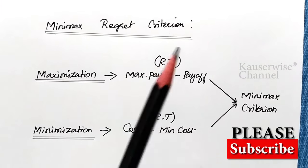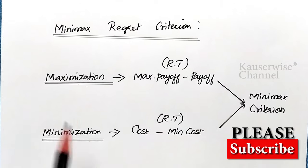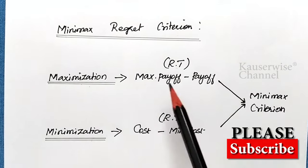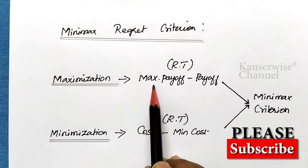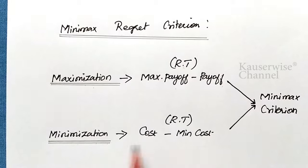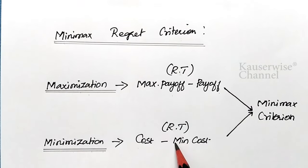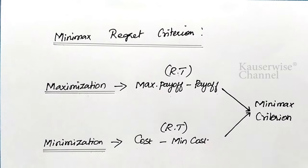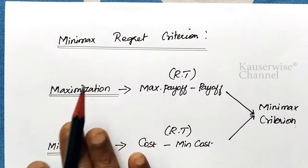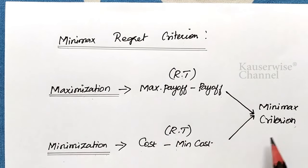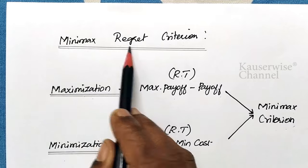Under Minimax regret criterion, we have two types: maximization problem and minimization problem. For both types, first you need to construct a regret table using the formula. For a maximization problem, the formula is maximum payoff minus payoff. For a minimization problem, the formula is cost minus minimum cost. After constructing the regret table, you need to apply the Minimax criterion regardless of whether the problem is maximization or minimization.